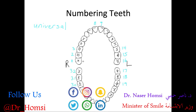That gives us 32 teeth in total. Of course, some people never develop wisdom teeth, so if you're missing those teeth you just skip those numbers — the surrounding teeth still keep their original numbers. Teeth that never develop are called congenitally missing teeth. That's the basics of the universal numbering system; there are other systems out there but for this video we'll stick with the universal system.